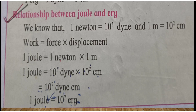We know that 1 newton = 10⁵ dynes and 1 meter = 10² centimeters. Using the formula Work = Force × Displacement, 1 joule = 1 newton × 1 meter = 10⁵ dynes × 10² centimeters = 10⁷ erg. Therefore, 1 joule = 10⁷ erg. Do practice all these important questions from Chapter 2.